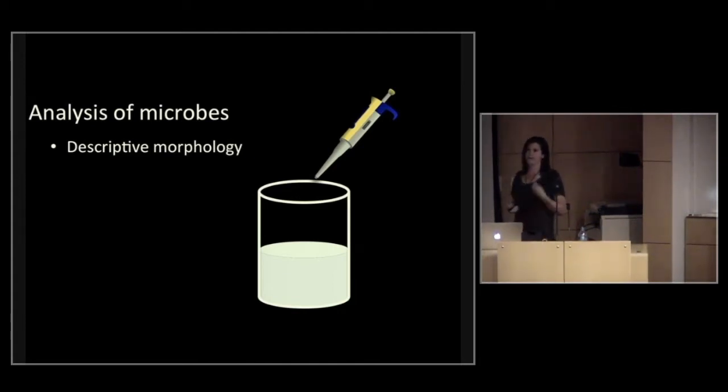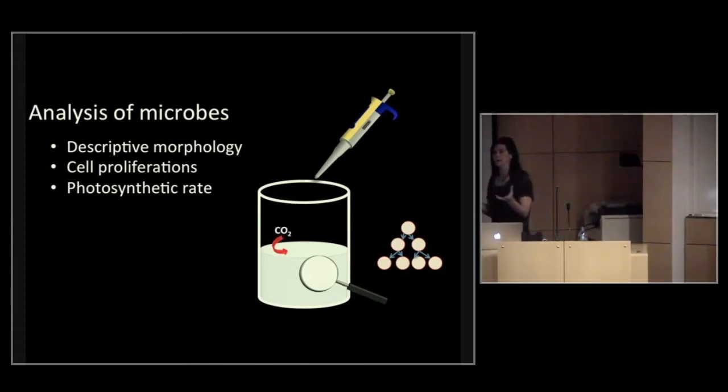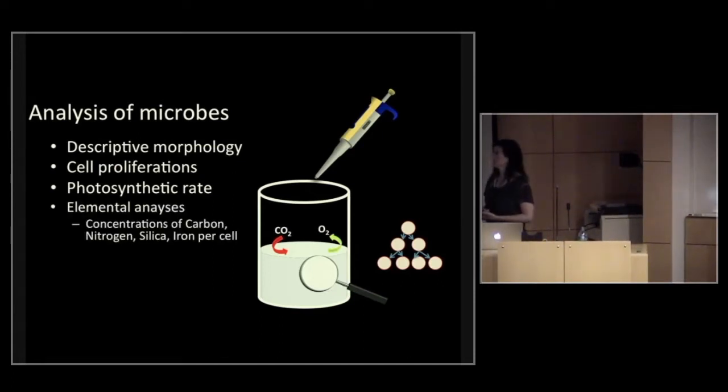Besides descriptive morphology, we have far more impressive techniques. We can look at cell proliferation, how quickly these things divide. They double, and we can watch them double under a microscope. We can also use chemical methods. We can also look at the photosynthetic rate. For example, within a media, we might check the amount of CO2 that's taken up into the media where these microbes are growing, or we might look at the amount of oxygen that's being produced by those microbes. We can also do elemental analyses.